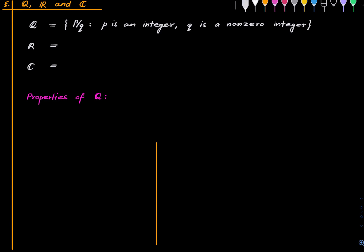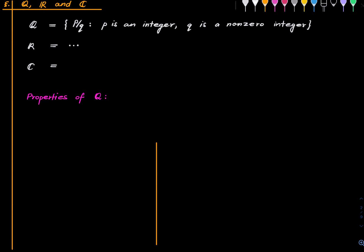Real numbers are not easy to describe precisely, but we have a feeling for what they are — typically we represent them as points on a line. This is a sufficiently sophisticated object first introduced properly in real analysis; our basic intuition is sufficient here. Then we have the complex numbers, which look like a + ib where a and b are real numbers. What we learn about complex numbers in high school is all we will be assuming.